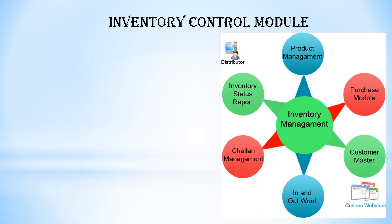Next is the inventory control module. It has all things related to inventory. First is the customer master distributor — what should be managed and in which way. This is all in this module: production management, purchase module, customer master, invoice, and challan. This is a receipt of inventory status — all things relate to inventory management to achieve the target.